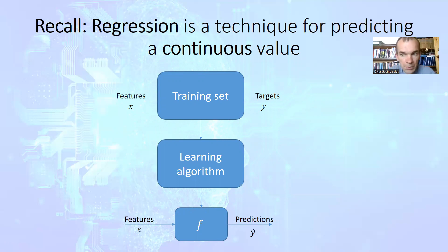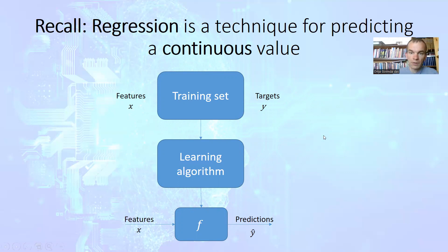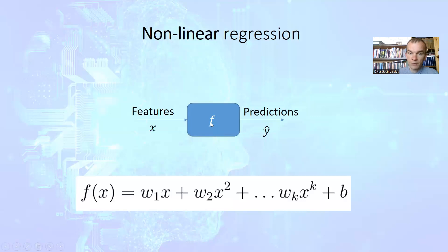Let's recall the general regression principle: we have some features and also the target values for these features — not labels, because labels are for classification, but rather targets for the problem of regression. We then apply some learning algorithm which will give us predictions based on test data. So we need to build some dependence — find some function f that will produce a prediction based on the current value of our feature. We consider for simplicity here the one-dimensional case.